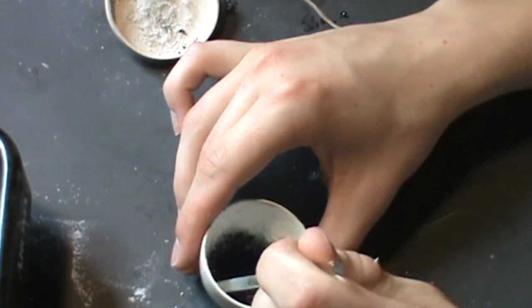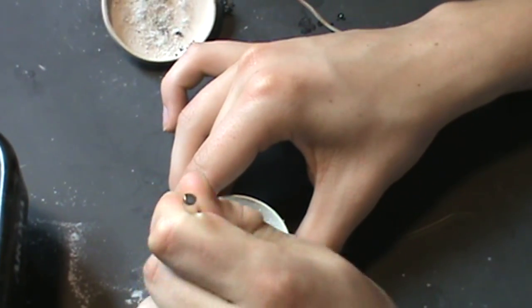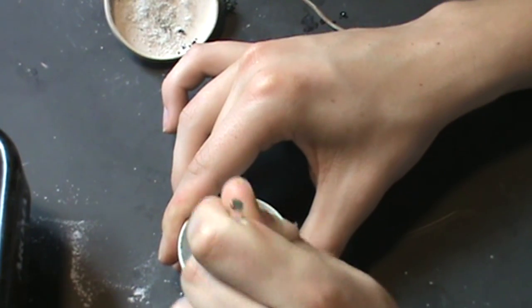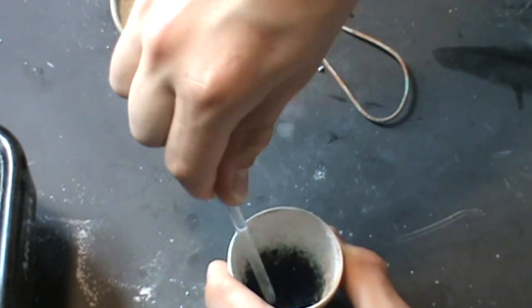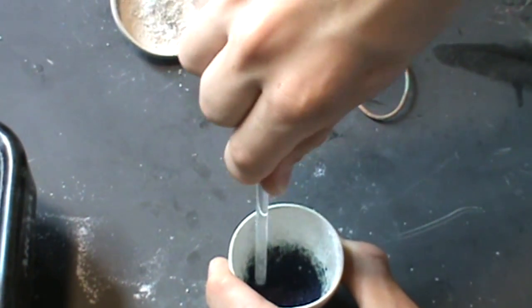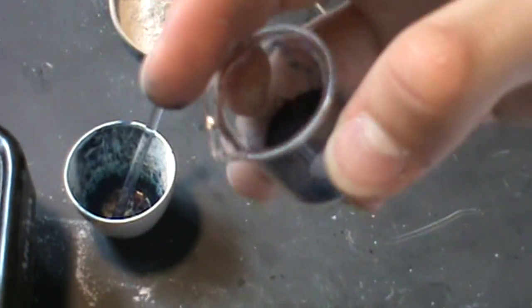Rather than risk staining my mortar and pestle blue for eternity, I decided to crush up the solid inside of the crucible using a glass rod instead. Once I manage to get most of the material out of the crucible, this is what I'm left with.